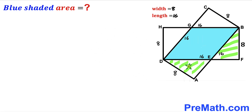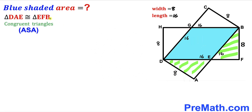Now let's focus on two right triangles. We can see that triangle DAE and triangle EFP are congruent according to the angle-side-angle congruency theorem. The two angles at E are vertical angles, one angle is 90 degrees, another is 90 degrees, so the third angles must also be congruent.